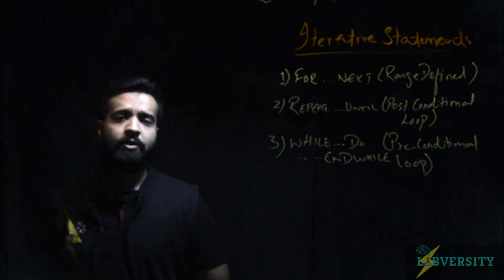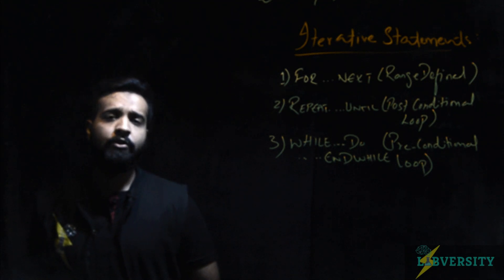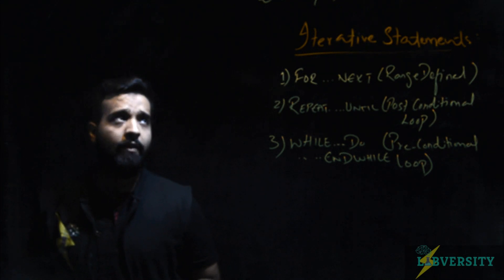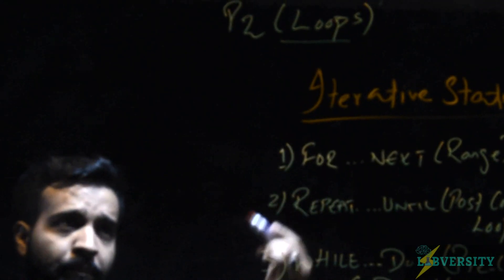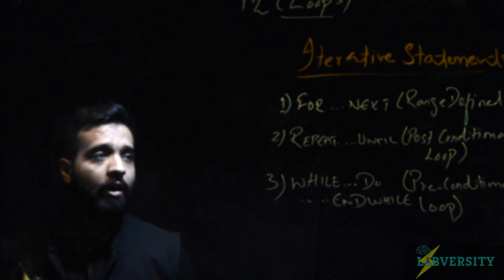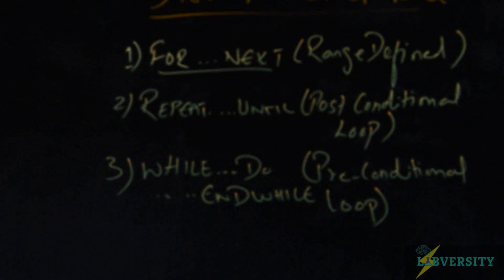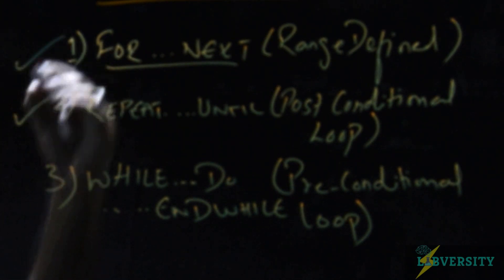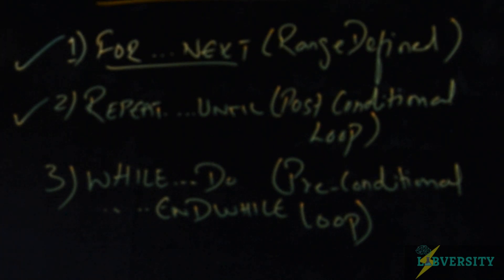The topic we will be discussing today is one that students really struggle with, and that is iterative statements. Iterative statements in layman terms are called loops. When discussing the Cambridge syllabus, we have three loops: for-next loop (used when a range is defined), repeat-until (a post-conditional loop), and while-do (a preconditional loop).